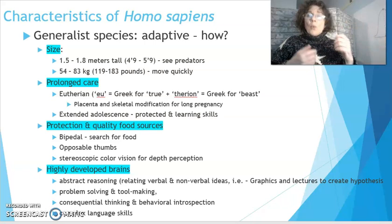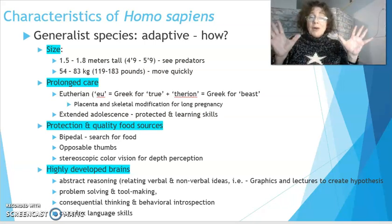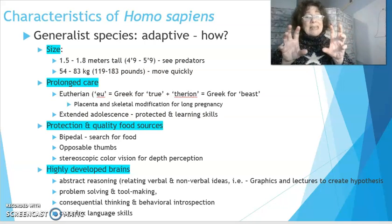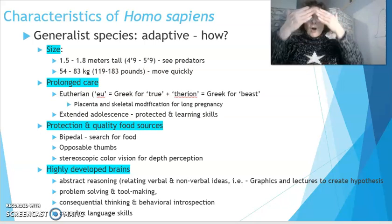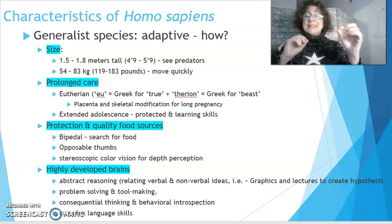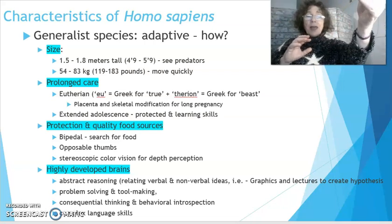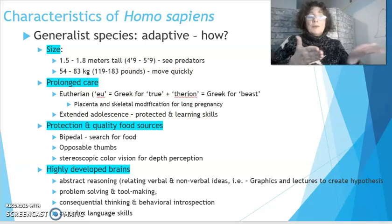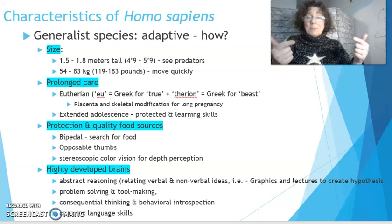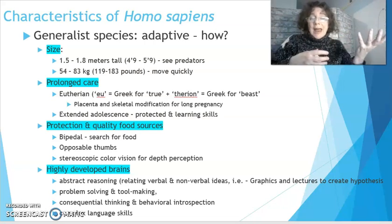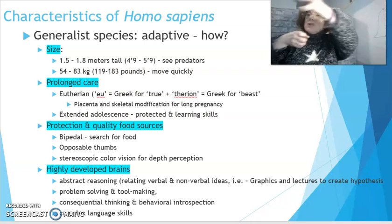Because we're bipedal we can search for food very efficiently, and because we have opposable thumbs we can do fine motor work to protect ourselves and develop food sources. Our flat face allows us to see stereoscopically — meaning depth perception — to find food far ahead and protect ourselves. Our highly developed brains are not just for protection; they are for problem solving and tool making. We can abstract and reason things out using many different sources of information.